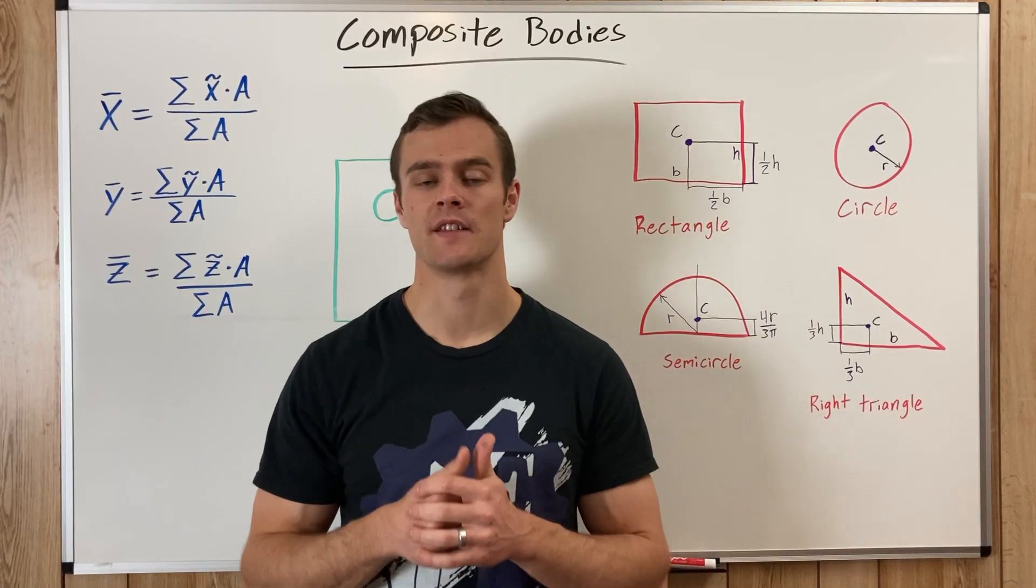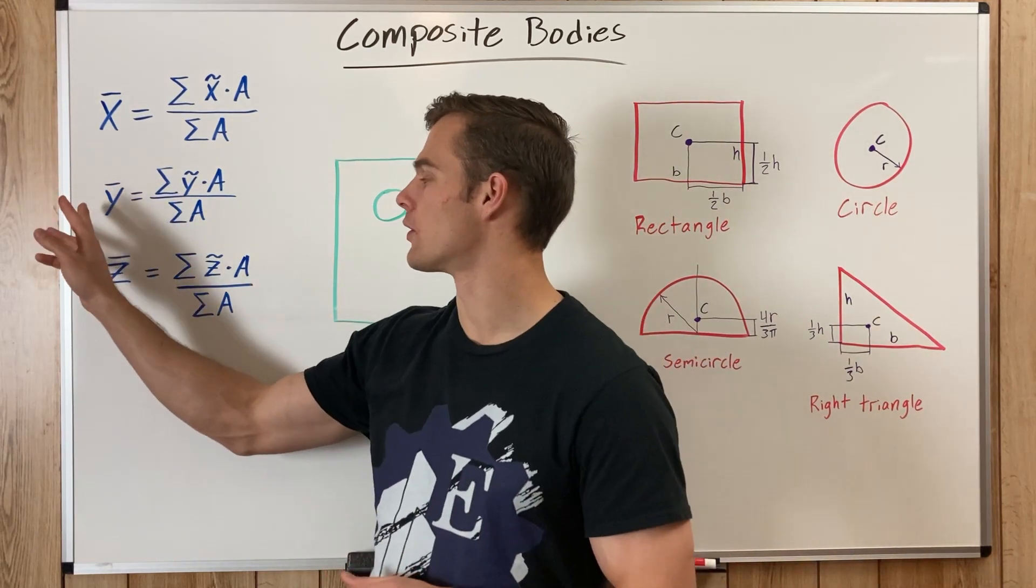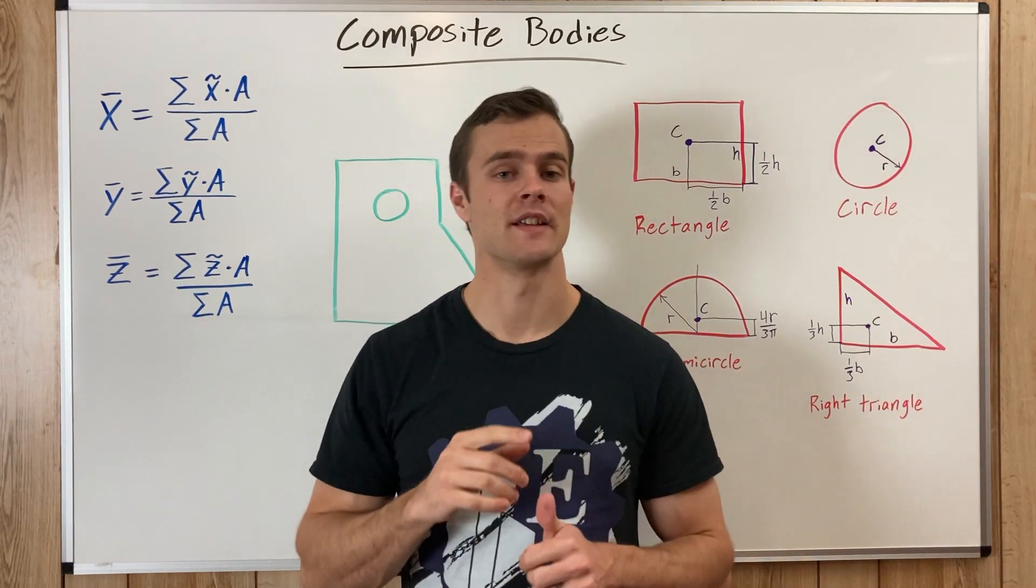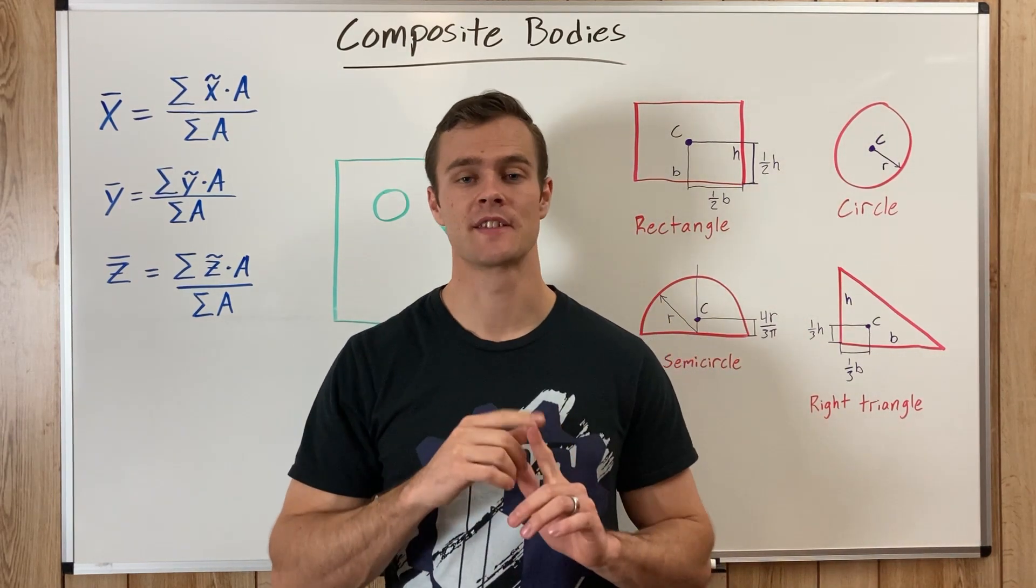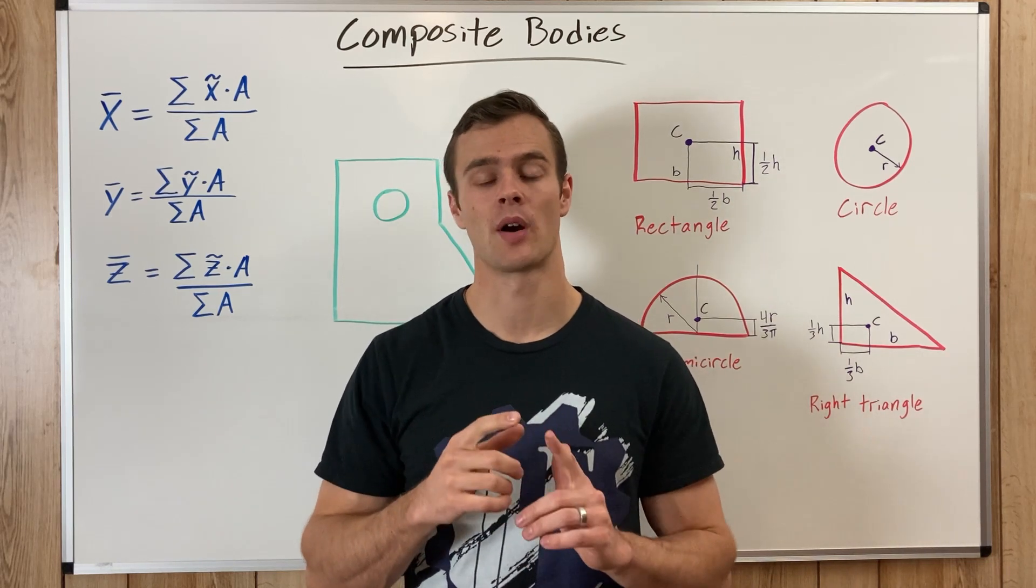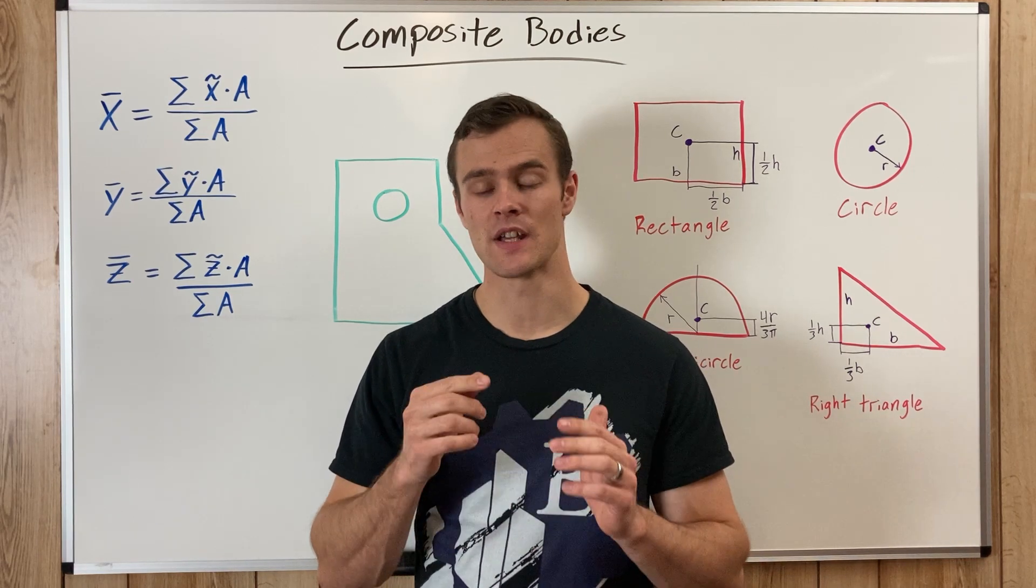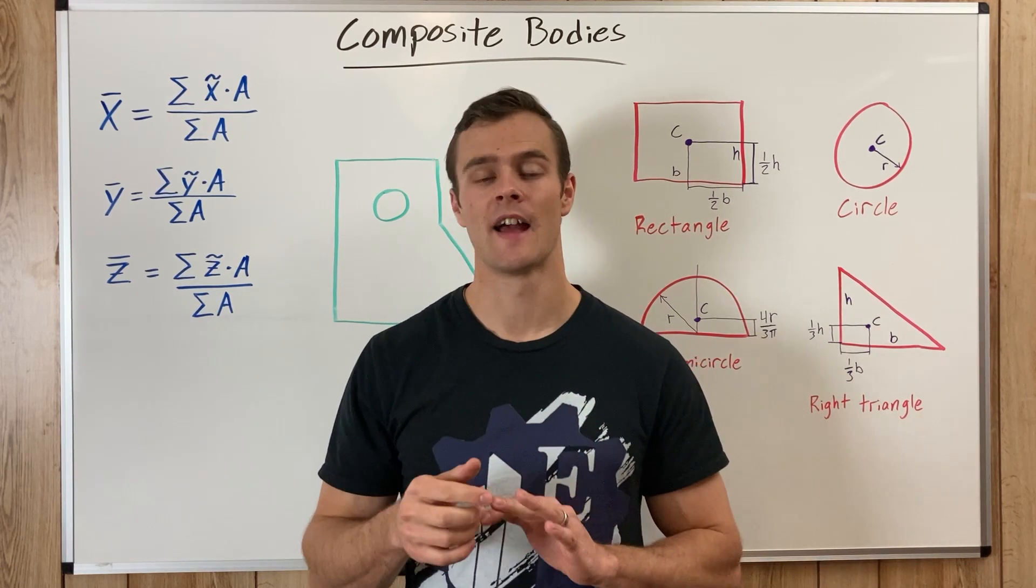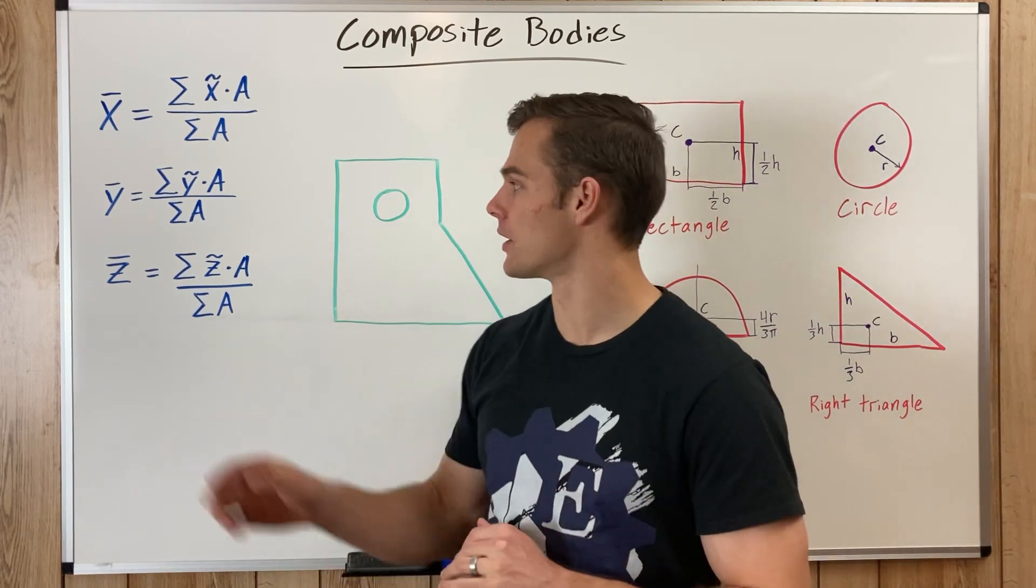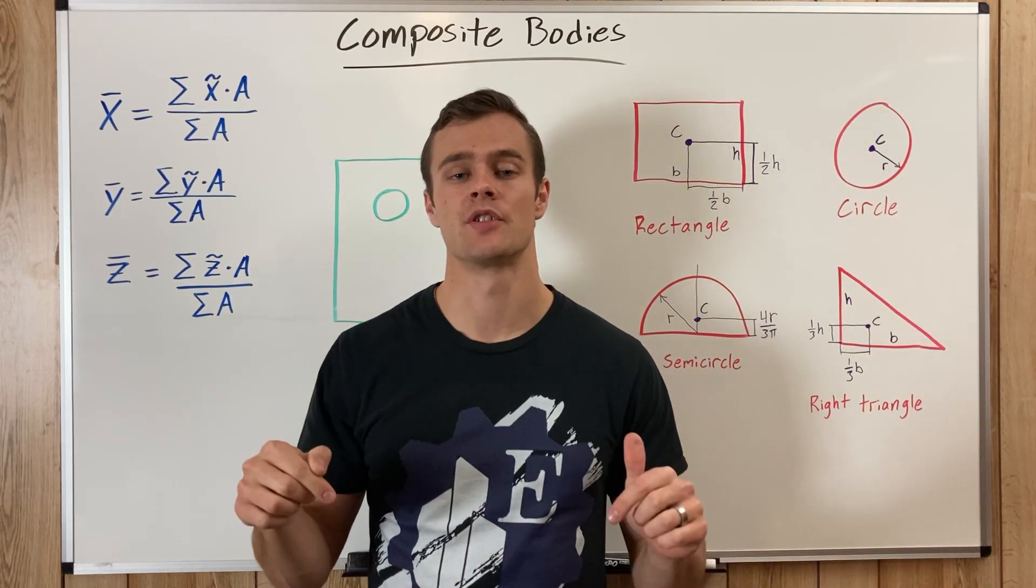So in five steps, we can find the center of gravity of an area, which is the x and y coordinates of the center of mass of that object. The first one is to establish a coordinate system, the second is to break the shape into its composite shapes or parts, the third one is to find the x and y centers of mass of each of those composite parts, and then the fourth is to find the area of each of those parts, and then five is to plug them into these equations. Now all those steps are written out down in the description, you can check that out.